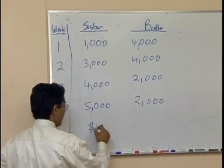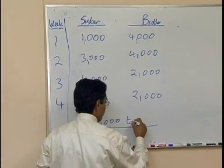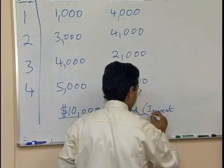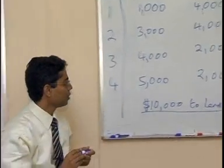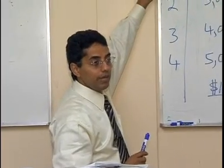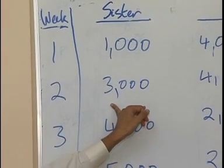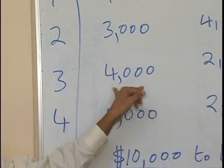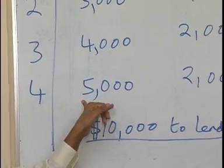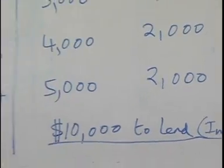You have $10,000 to lend — or invest. At the end of week 1, your sister gives you $1,000 back; week 2, $3,000; week 3, $4,000; week 4, $5,000. Your brother gives you $4,000, $4,000, $2,000, and $2,000 over those same four weeks. The question remains: who would you lend to?